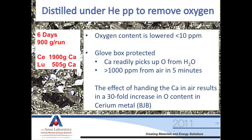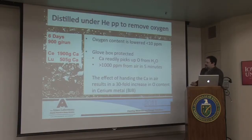Our process takes about six days to make 900 grams of this material. We consume about 1,900 grams of calcium when we make cerium, for example, and 500 grams when we make lutetium.